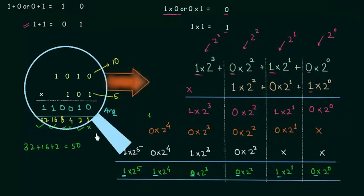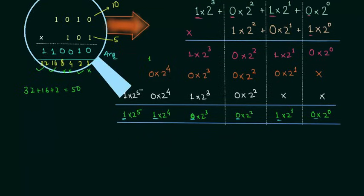It is advised to cross-check your answer by converting the binary numbers to decimal, because there are so many zeros and ones involved and the chances of making a mistake are very high. Always convert the binary numbers to decimal and cross-check. Every time you don't have to write down the weights — you can directly perform the multiplication. Let's see how we can do it.